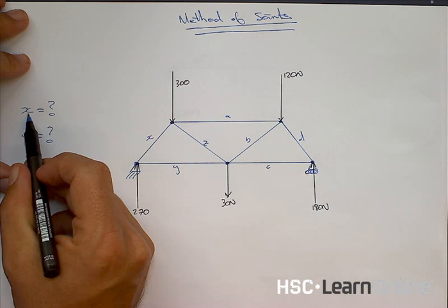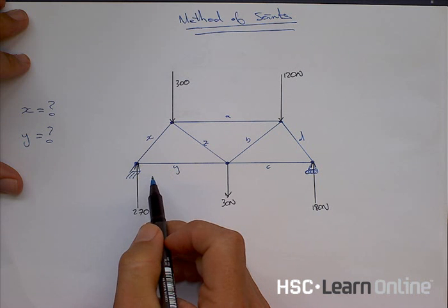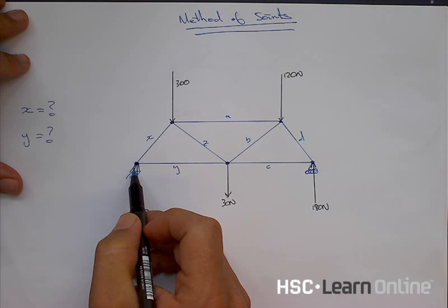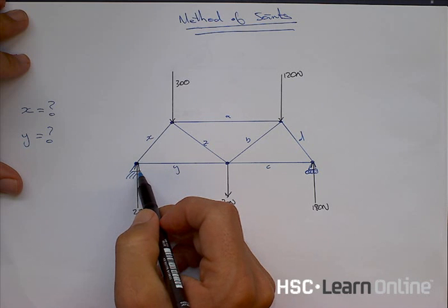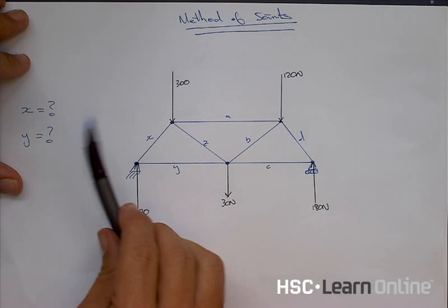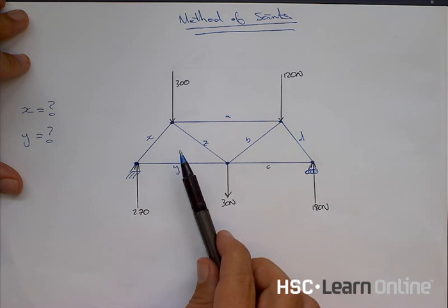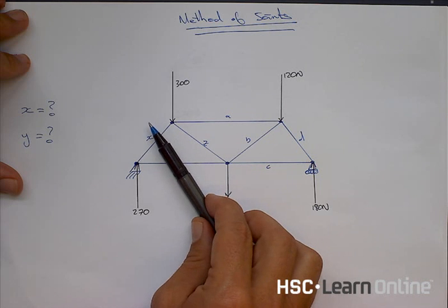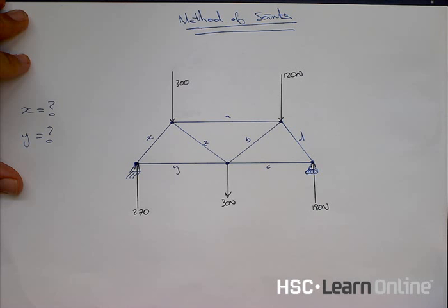When we look at X and Y, we see they both come to one joint, with one unknown force at that joint. We can simplify this entire problem by simply looking at that one joint and isolating the problem — and that's the whole concept of method of joints.